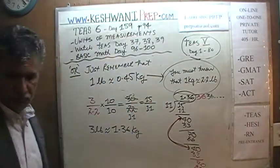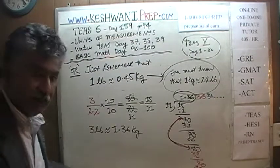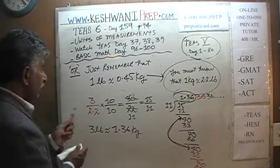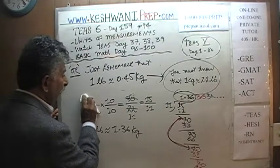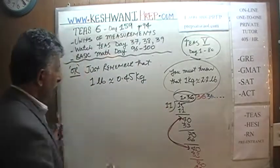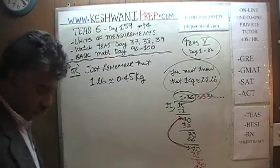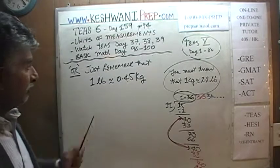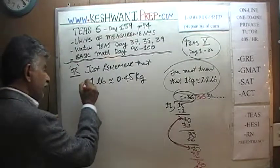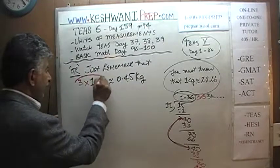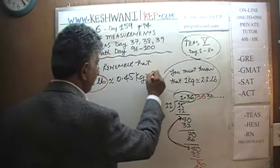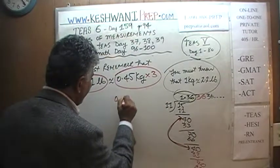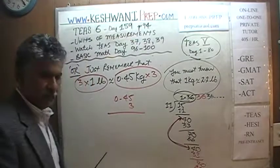If you know that 1 pound is approximately 0.45 kilos, life would be very simple. We need to convert 3 pounds into kilograms. We already know that 1 pound is 0.45 kilos, but we want to convert 3 pounds. So multiply both sides by 3: 3 pounds is simply 0.45 times 3.